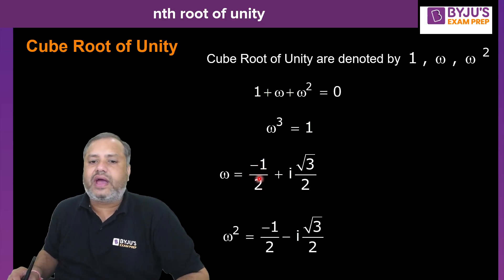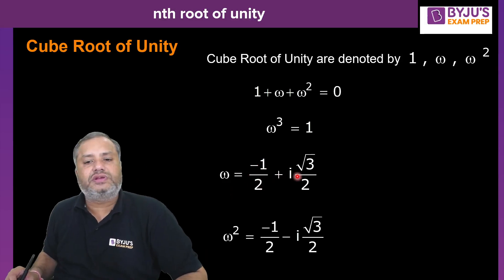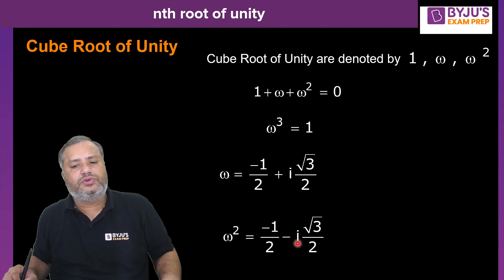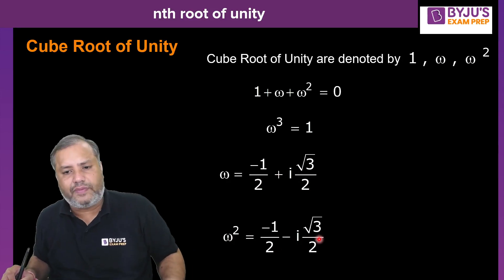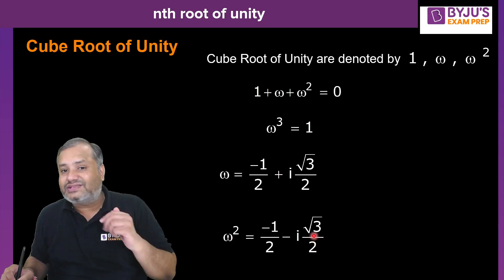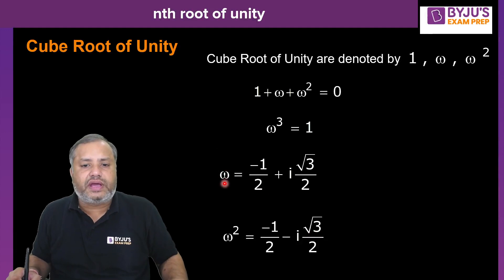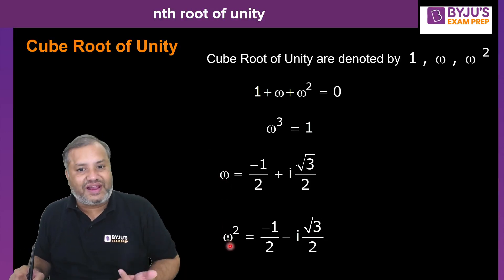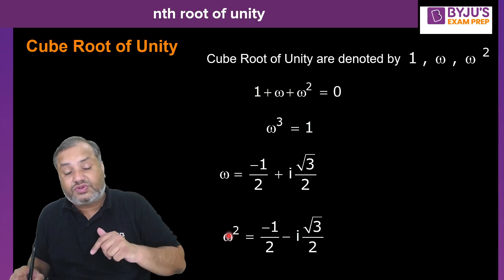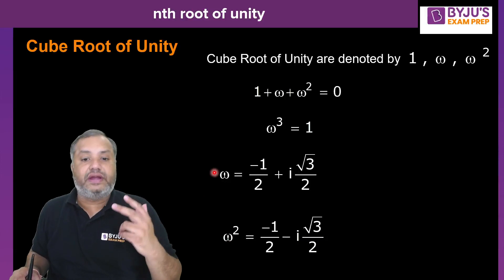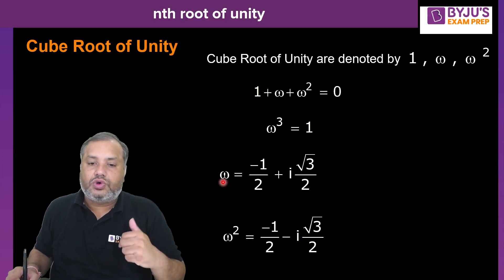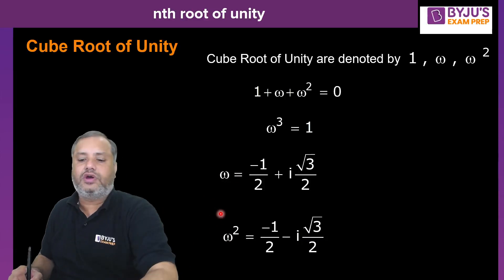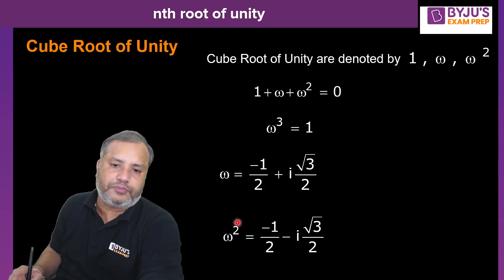The two complex cube roots of unity are: ω = −1/2 + i√3/2 and ω² = −1/2 − i√3/2. Interestingly, when you square ω you get ω², and when you square ω² you get ω. So on squaring either complex cube root of unity, the other one is obtained.